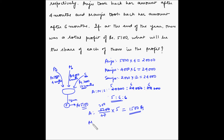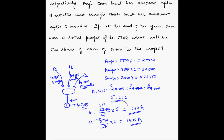For Manju, 5,100 ÷ 17 × 6 = rupees 1,800. Since Sanju's ratio share is the same as Manju's, Sanju will also be getting rupees 1,800.